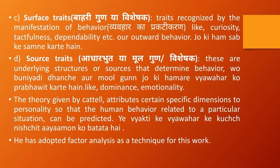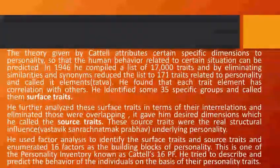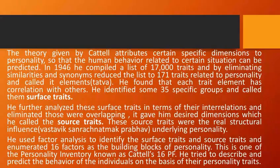These were the four types of traits given by Cattell. The theory given by Cattell attributes certain specific dimensions to personality so that the human behavior related to a particular situation can be predicted. He adopted factor analysis as a technique of work. In 1946, he compiled a list of 17,000 traits and by eliminating similarities and synonyms, reduced the list to 171 traits related to personality and called it elements.